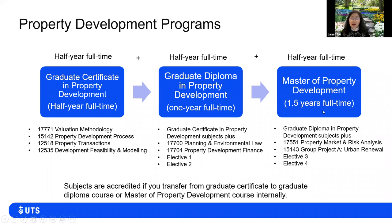For the master's degree, you have the four subjects from the Graduate Certificate, plus two from the Graduate Diploma, plus two additional core subjects from the master's course, plus four electives — totaling 12 subjects. Whether you enroll in the Graduate Certificate or Diploma first, those subjects count toward the master's degree later. You then have four electives to select, either from other postgraduate subjects or the Valuation Sub-Major.